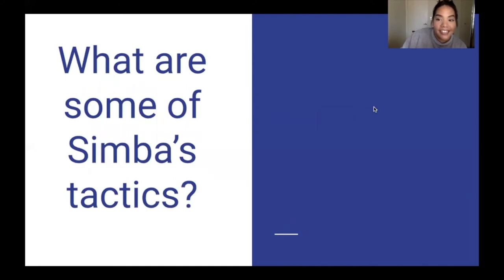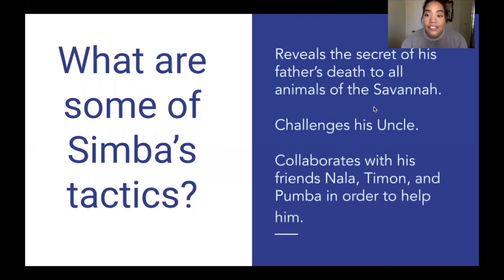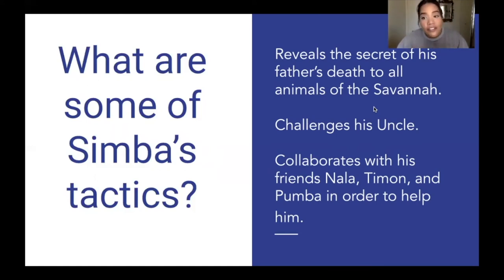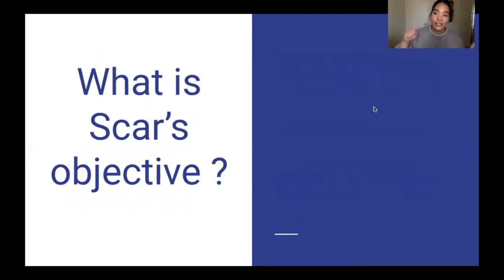What are some of Simba's tactics — things he does to bypass his obstacle and achieve his objective? He reveals the truth of his father's death to the animals of the savannah. He gathers the courage to challenge his uncle, securing his rightful role as leader. He also collaborates with his friends Nala, Timon, and Pumbaa to help him throughout the story.